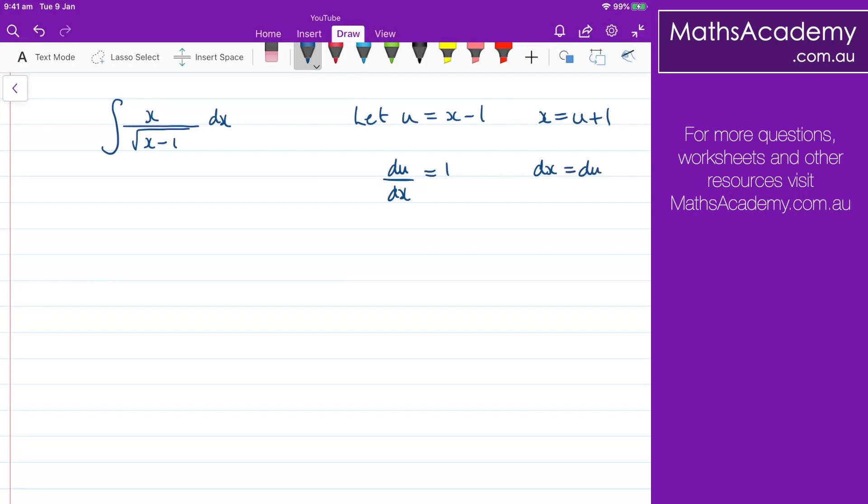And now that I have those, I can substitute those back into this original integral. We have x, well, we know that x is equal to u plus 1. So we've got the integral of u plus 1.